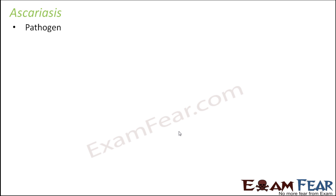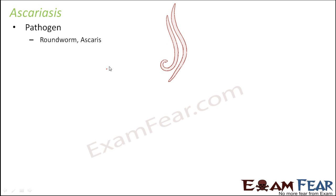The next disease we will discuss is Ascariasis. As the name itself suggests, it is caused by a worm — the roundworm Ascaris — and that is why the name is Ascariasis. These worms use the human body as a host to mature from larva to adult form, and these adult forms can sometimes be extremely long, up to even 30 cm in length.